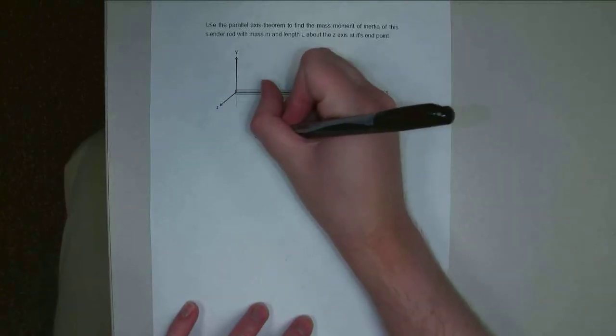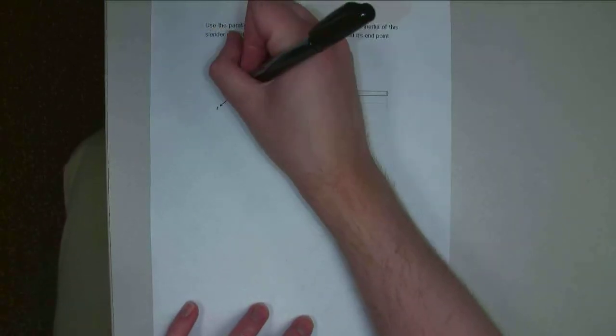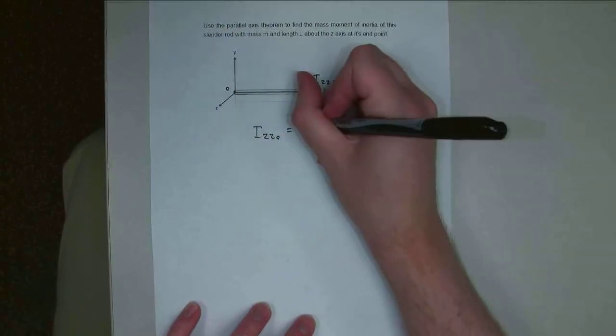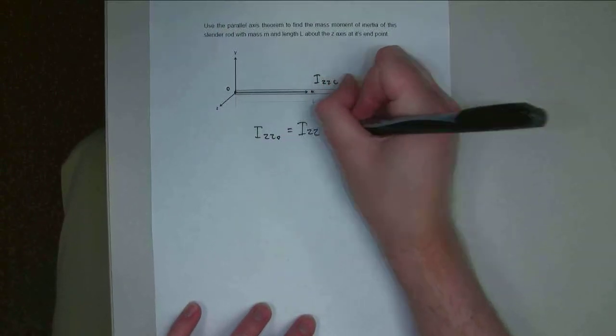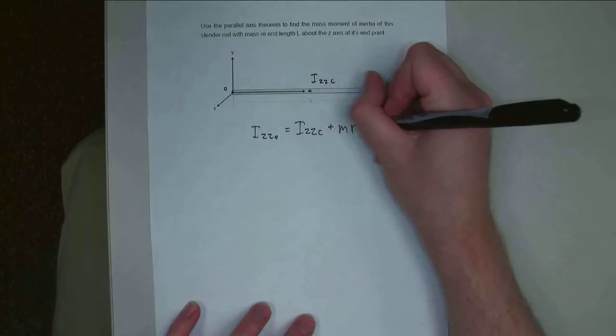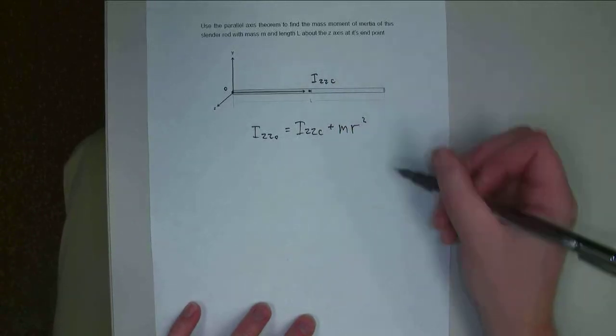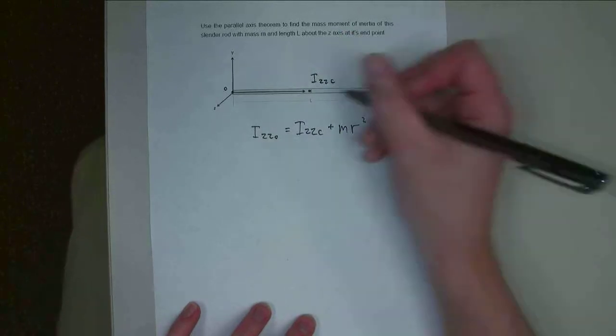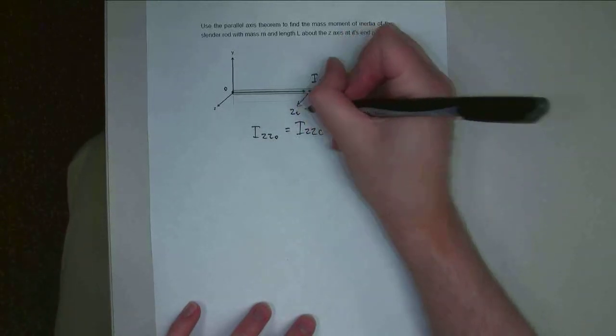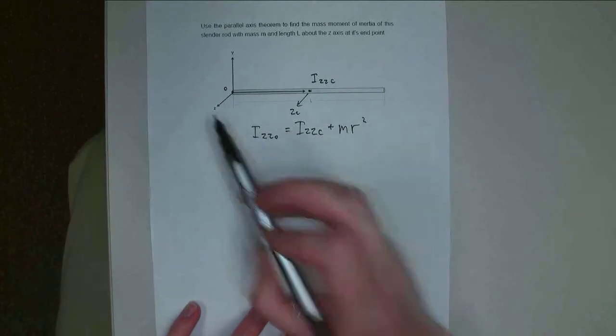So for that, Izz about what I'm going to call point O over here is going to be Izz about the centroid plus mr squared. And r is the distance between the z-axis going through the centroid and the z-axis over here at the origin point.